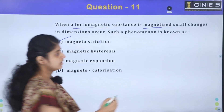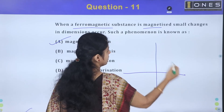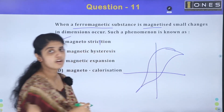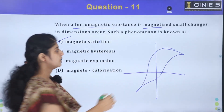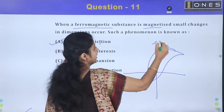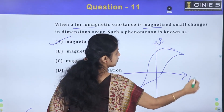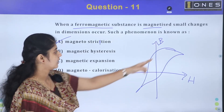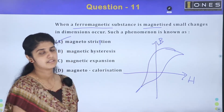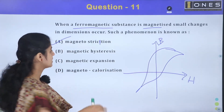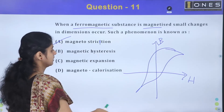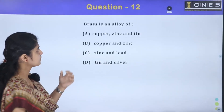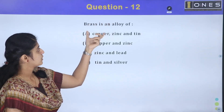The second option is magnetic hysteresis. When a magnetic field is applied to a material, the reversal of the magnetic field is a phenomenon of magnetic hysteresis. The magnetization lags behind the applied magnetic field, which is the defining characteristic of this phenomenon.